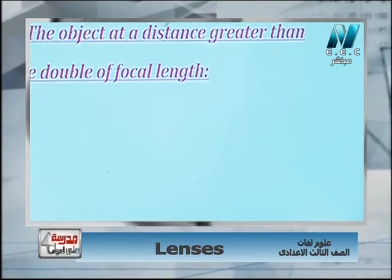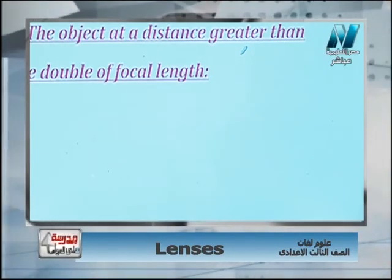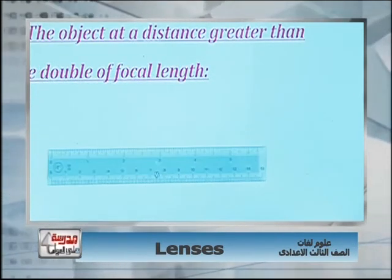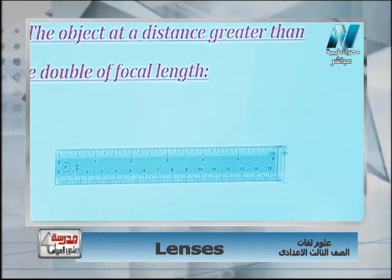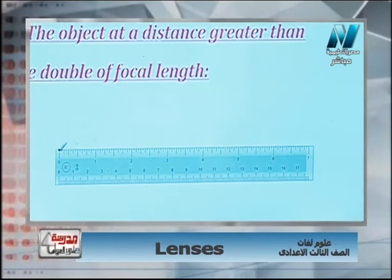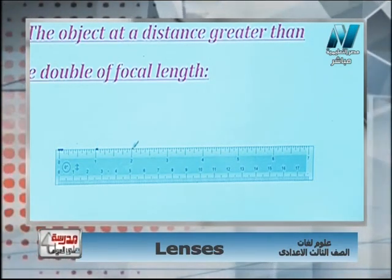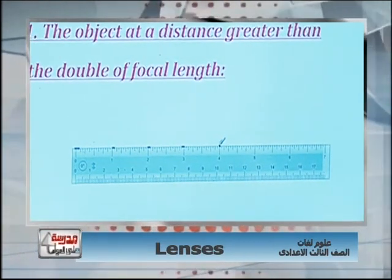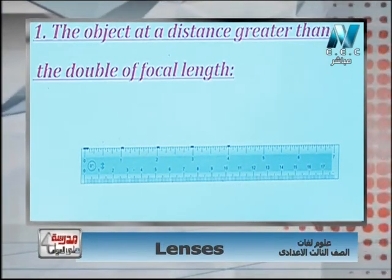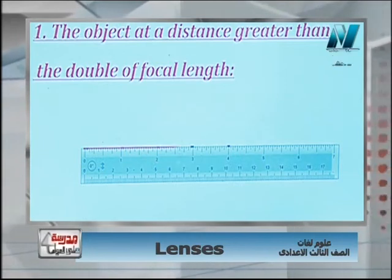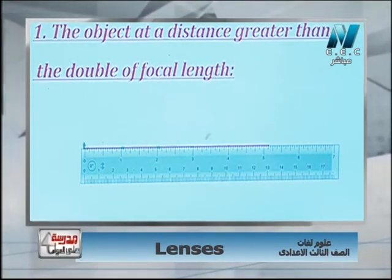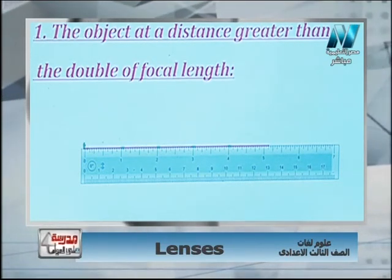Problem number one: the object is at a distance greater than the double focal length. We use the ruler to measure four equal distances — for example: 0, 3, 6, 9, and 12 — so we can draw the principal axis with these points marked.